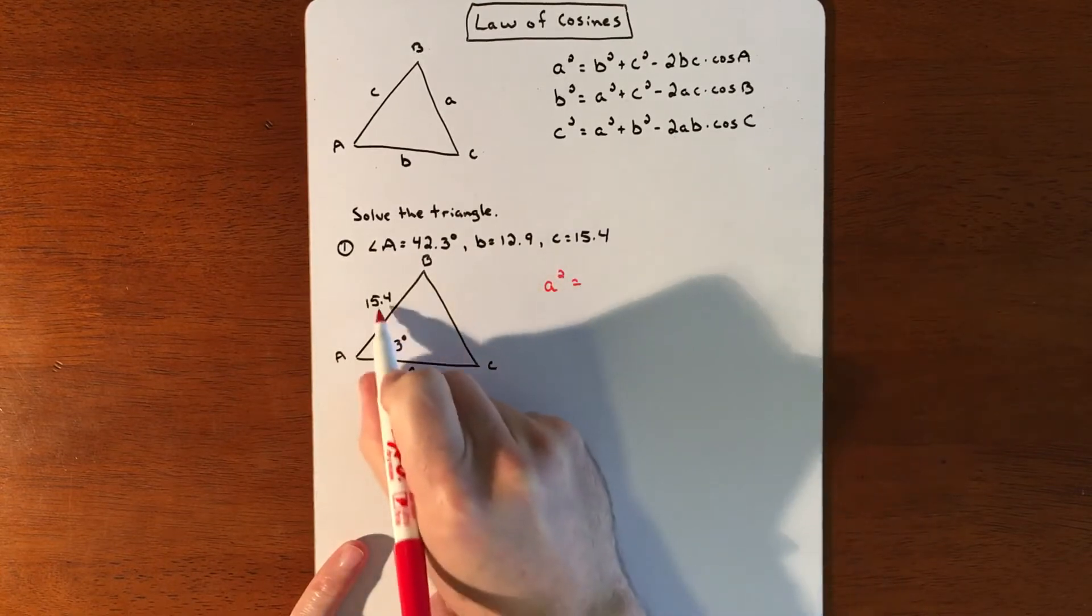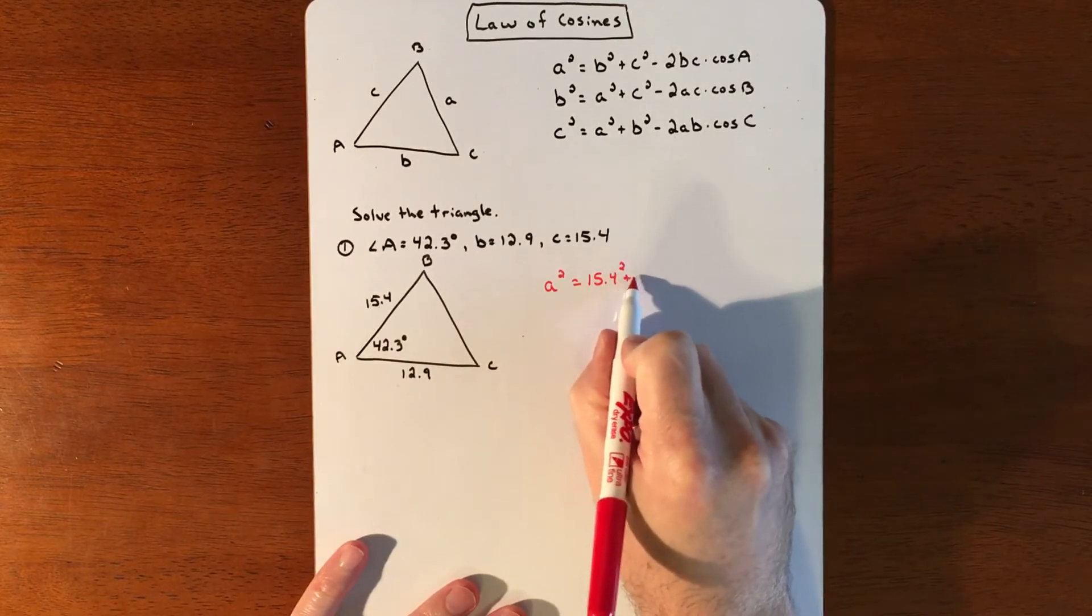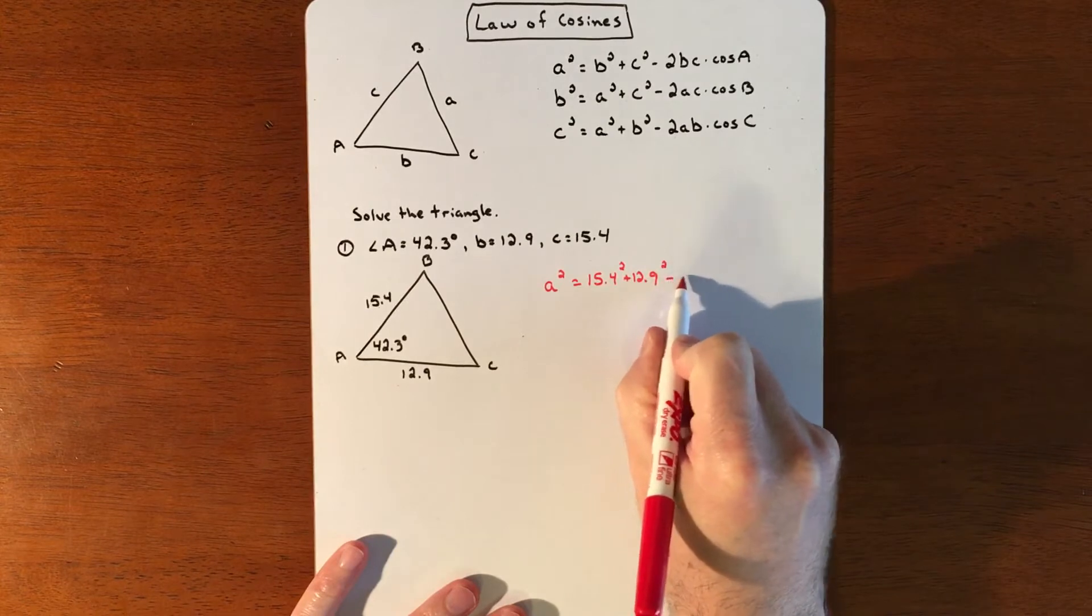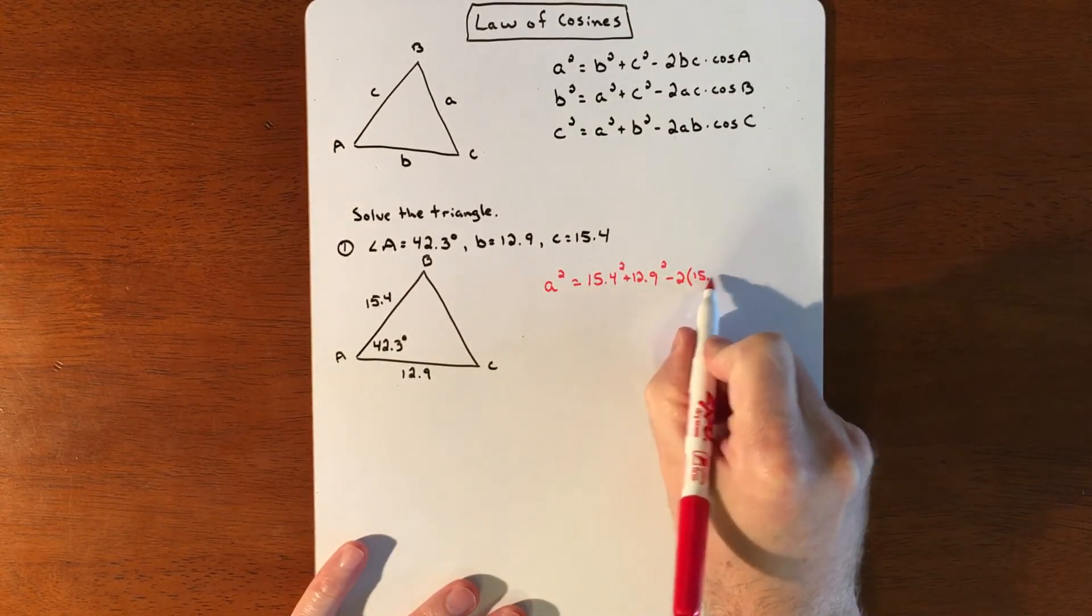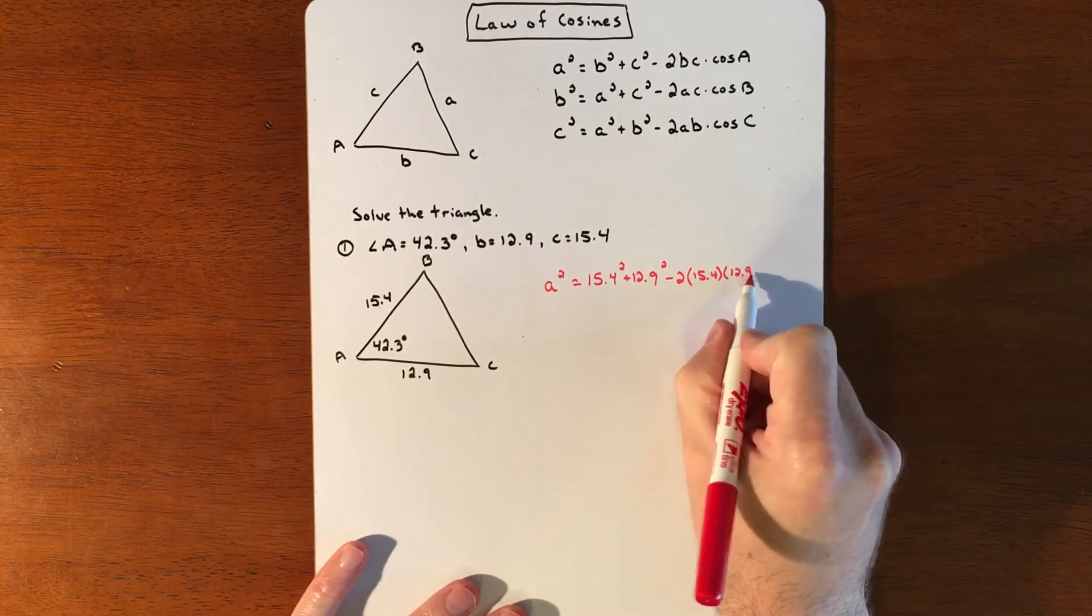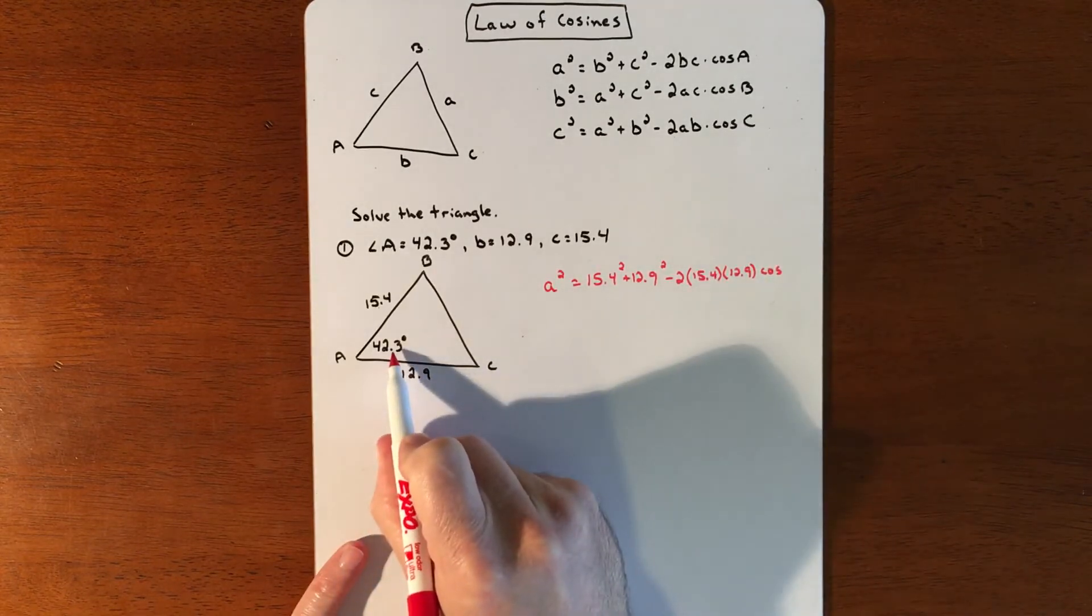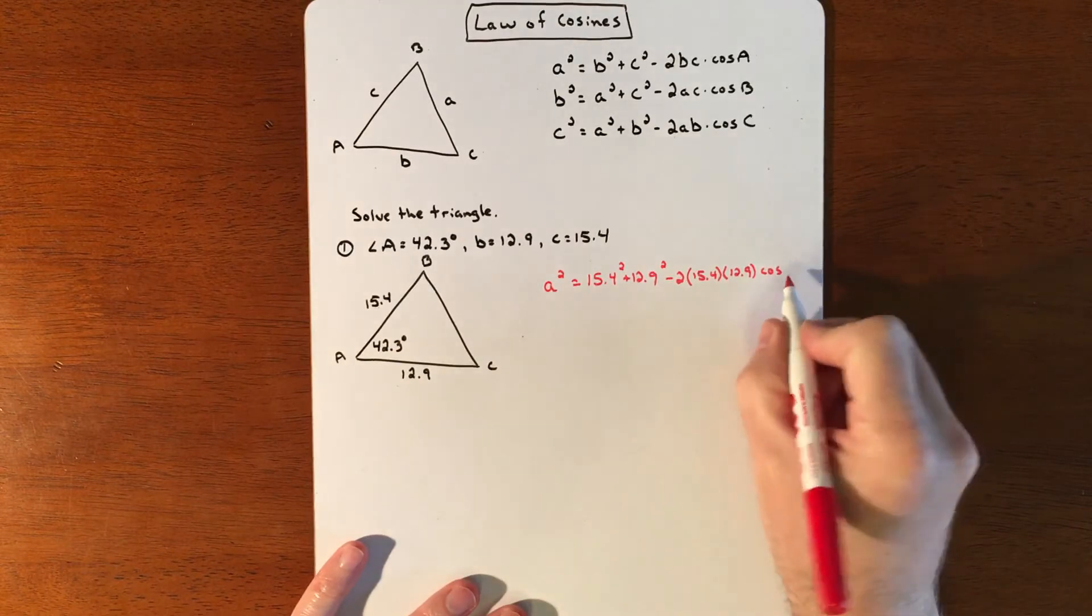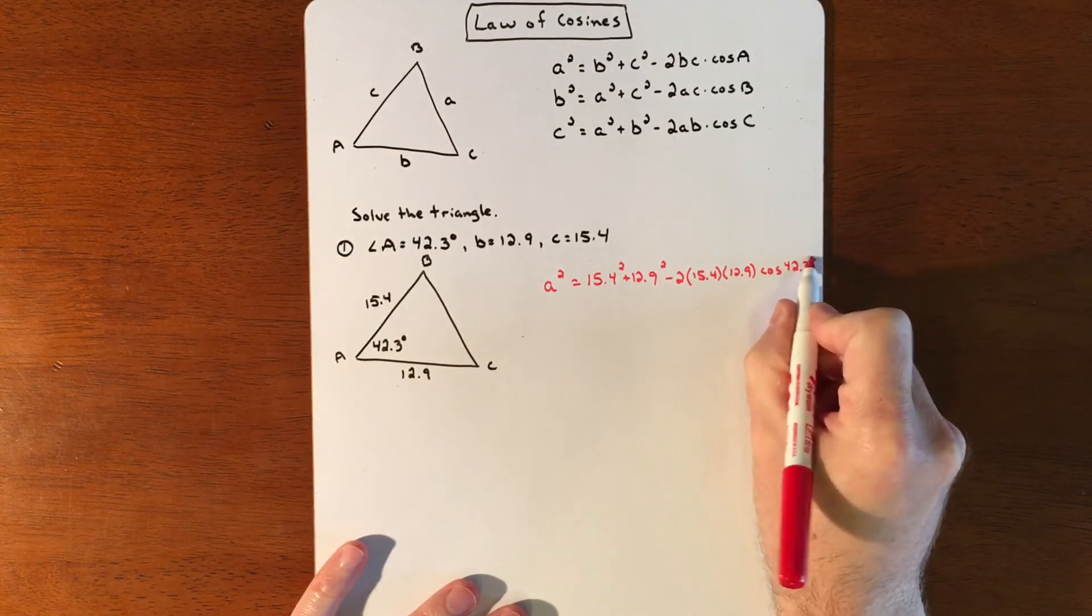We'll set up our formula as a squared equals the other two sides: 15.4 squared plus 12.9 squared, and then minus 2 times those exact same two numbers, 15.4 times 12.9, and then times cosine of the angle in between those two, which is the angle across from. So it's a and then cosine of a, 42.3 degrees.